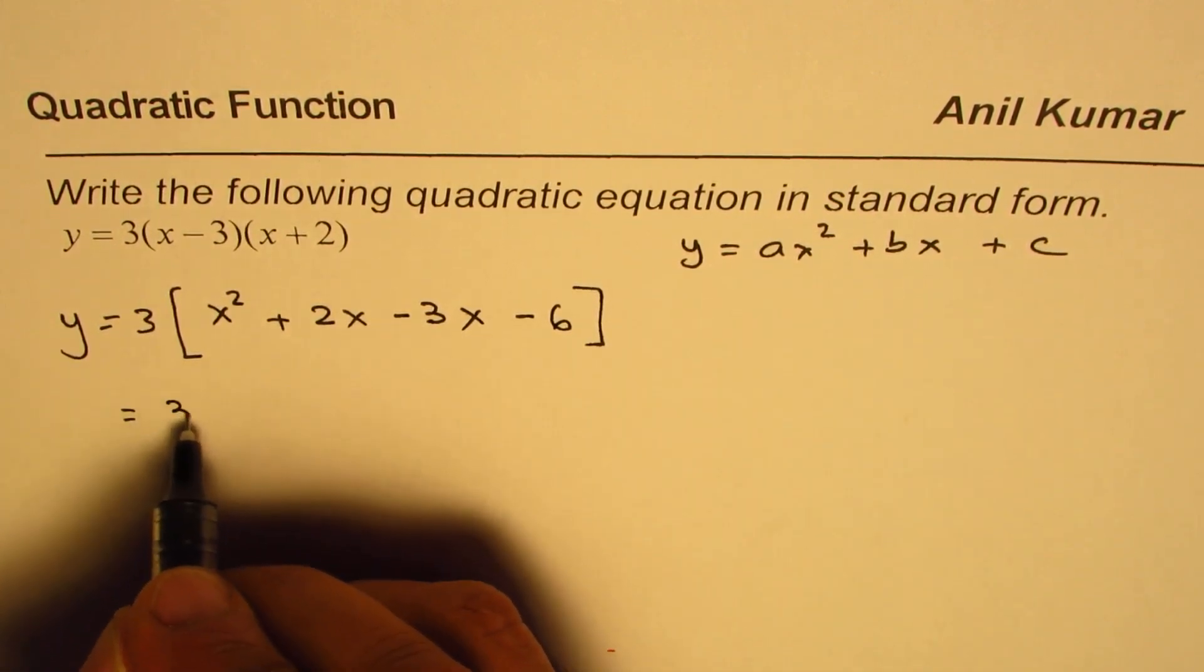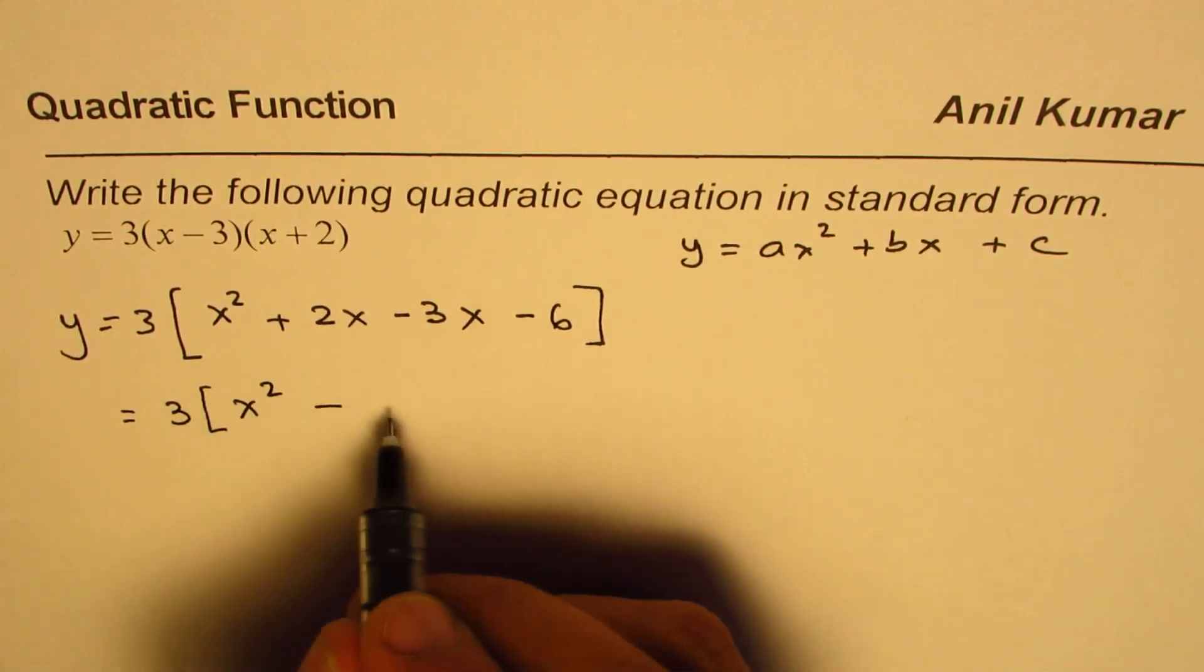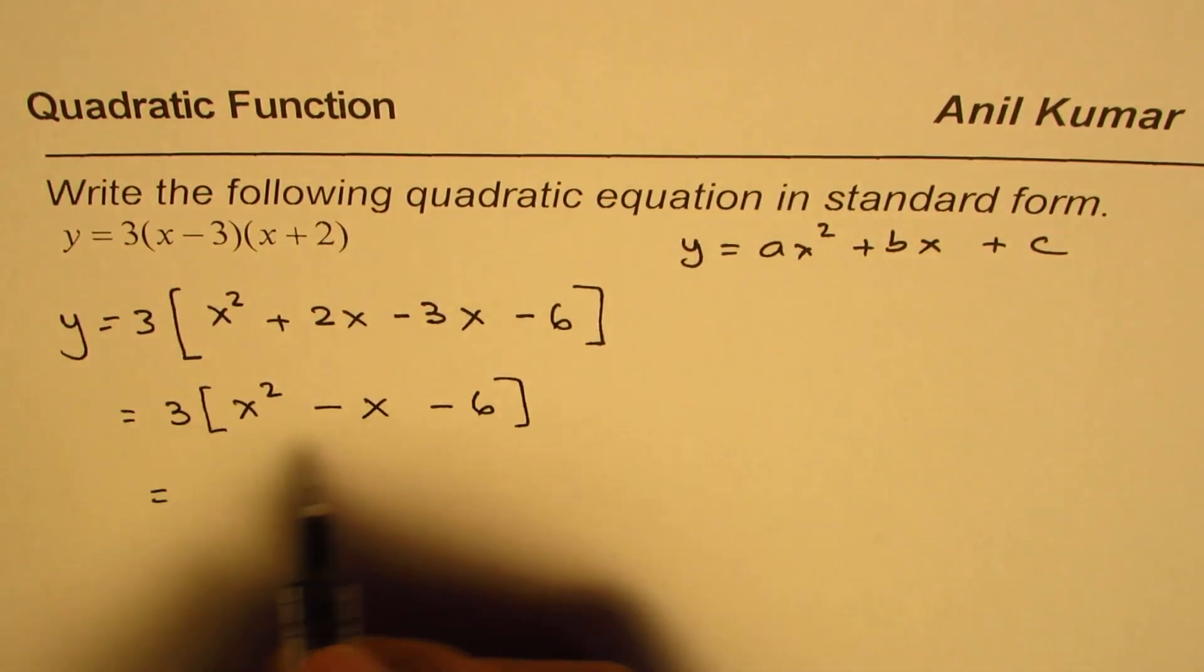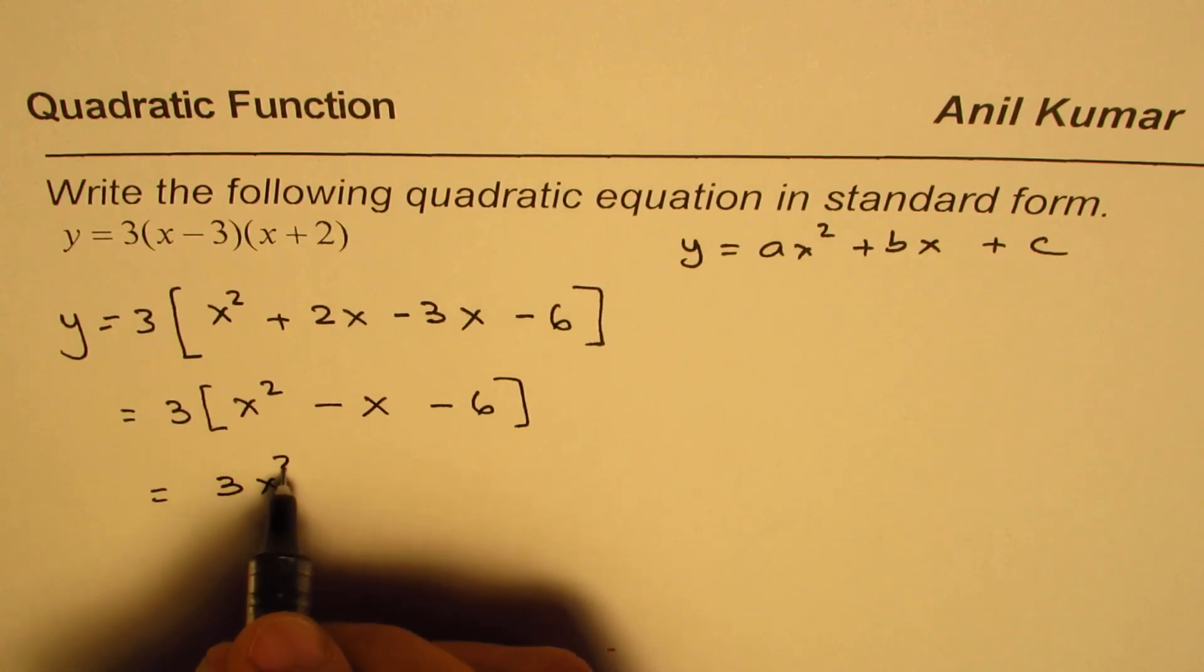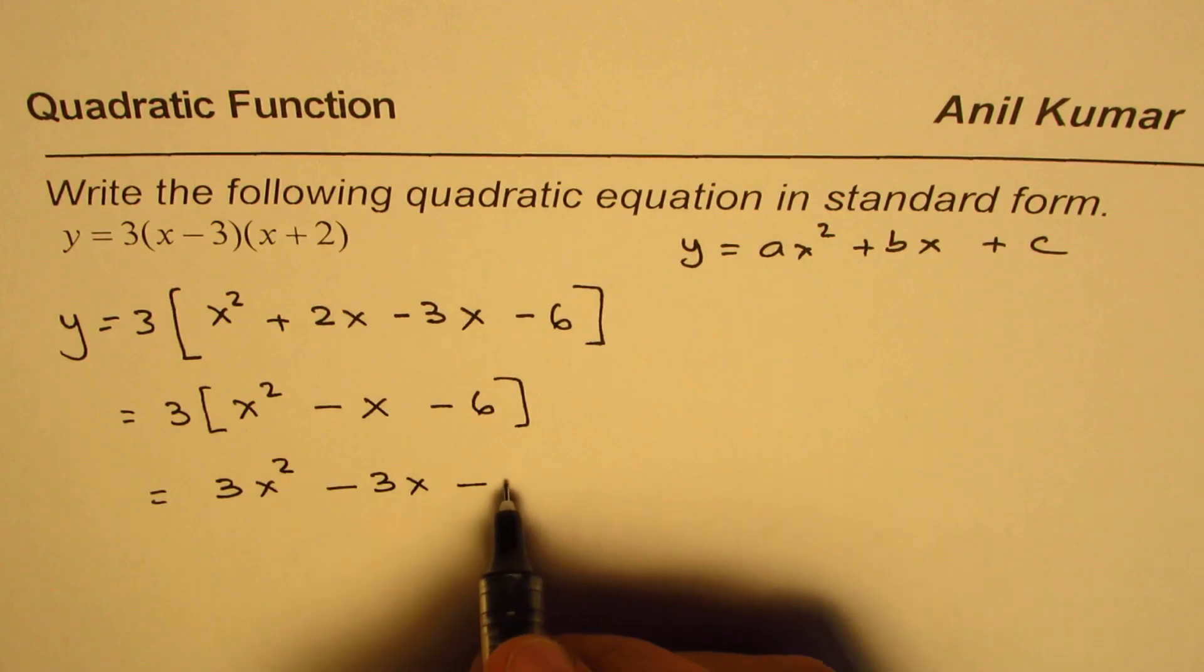You can combine the like terms. We get 3x squared plus 2x minus 3x is minus x minus 6. And now we can open the bracket to get 3x squared minus 3x minus 18, right?